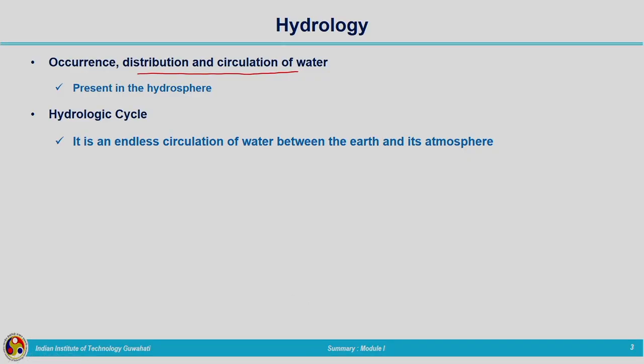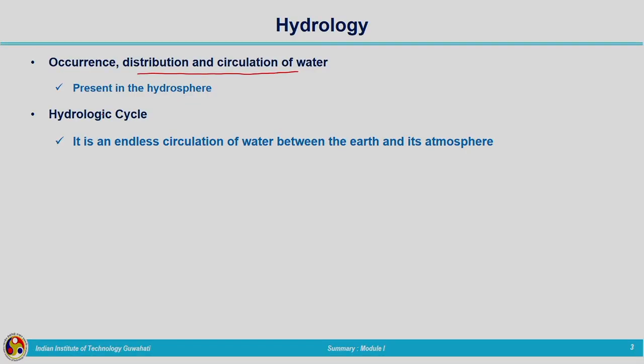After that we have seen the hydrologic cycle — how water transforms from one phase to another. In the atmosphere it is in vapor form, on the ground surface it is in liquid form, and in glaciers it is in solid form. We do not know from where the cycle is starting, and we have seen the details about the hydrologic cycle as the endless circulation of water between the earth and its atmosphere.